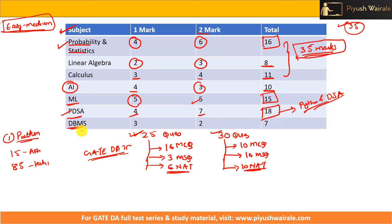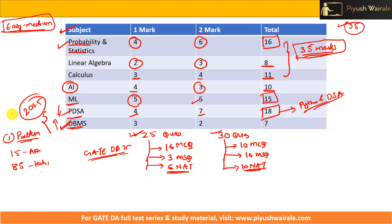For DBMS, there were just seven marks, and I would like to see more weightage on DBMS. I hope in the next GATE exam they will ask more questions from DBMS and decrease the marks for PDSA. There is a chance of increasing the weightage for DBMS and decreasing marks from PDSA for GATE 2025.